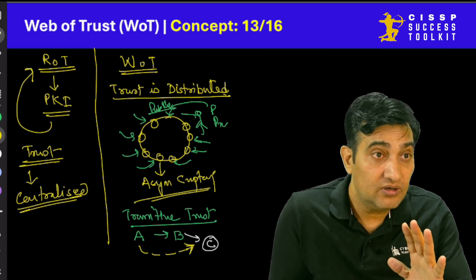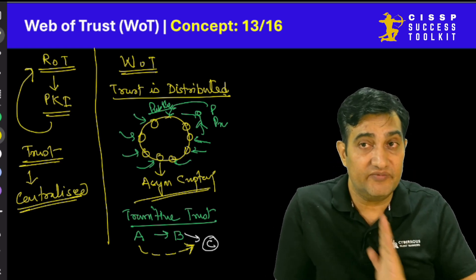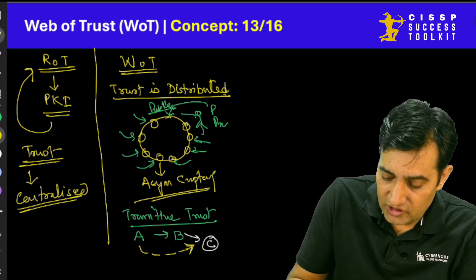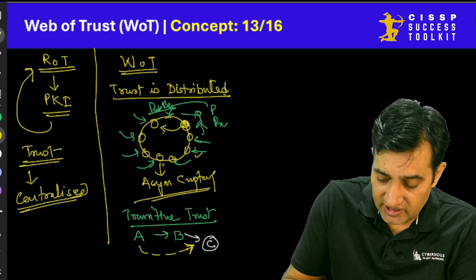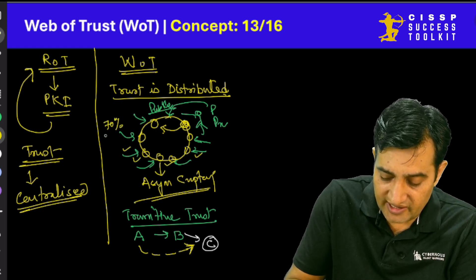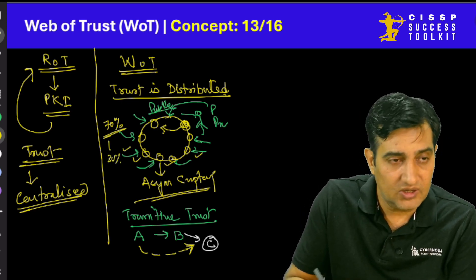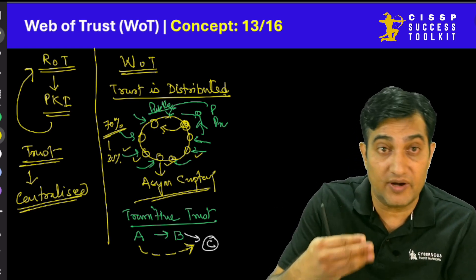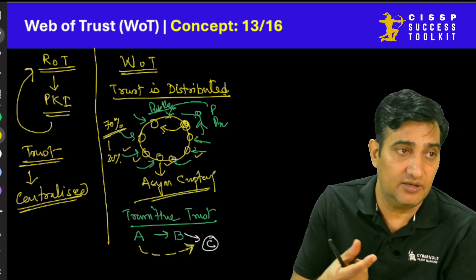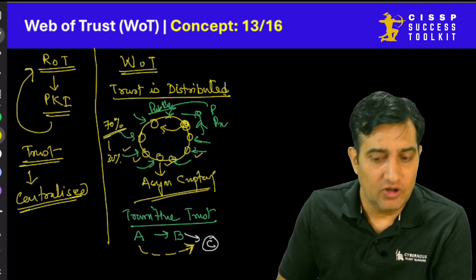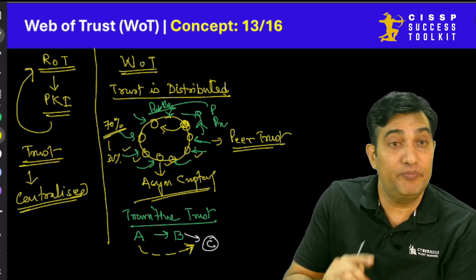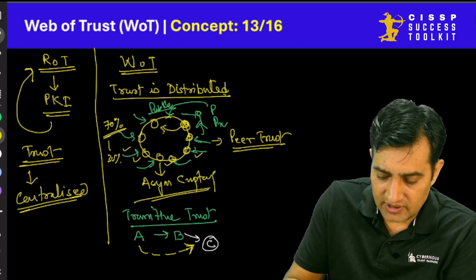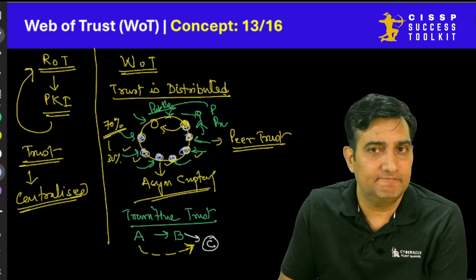Even though transitive trust is not ideal — in today's world we are going with zero trust architecture — it is one thing that actually happens in web of trust. If a new guy wants to send a message to someone new to the environment, he will validate whether all these people have signed. If 70% of the people have signed and validated the identity, you are not going to worry about the remaining 30%. You take it as transitive trust and trust the party. This is also called peer trust or peer-to-peer trust, where the other party can endorse a particular key pair by signing the public key.